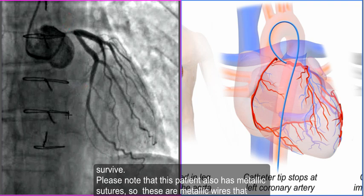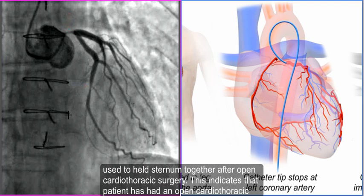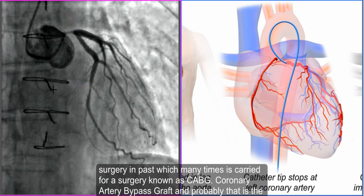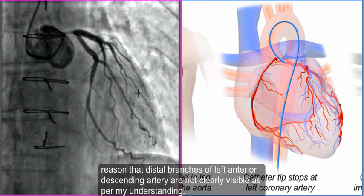Please note that this patient also has metallic sutures — these are metallic wires used to hold the sternum together after open cardiothoracic surgery. This indicates that this patient has had open cardiothoracic surgery in the past, which is many times carried out for a surgery known as CABG — Coronary Artery Bypass Graft. This is probably the reason that the distal branches of the left anterior descending artery are not clearly visible.